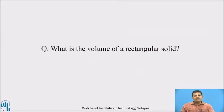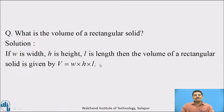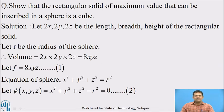Pause this video and answer this question: what is the volume of a rectangular solid? If W is the width, H is the height and L is the length of that rectangular solid, then the volume is given by V equal to the product of the width, height and the length. Now consider one example: show that the rectangular solid of maximum volume that can be inscribed in a sphere is a cube.